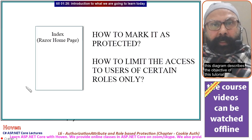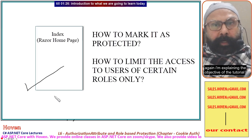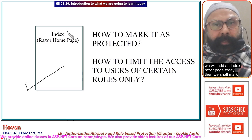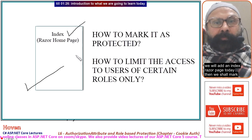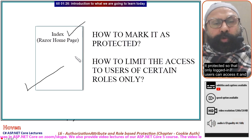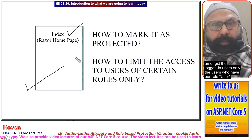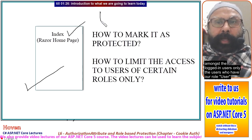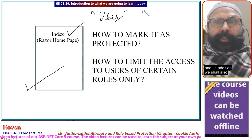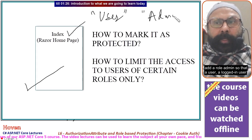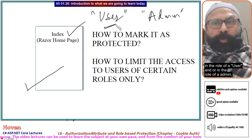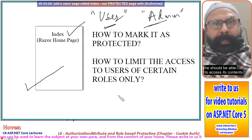This diagram describes the objective of this tutorial. We will add an Index Razor page today, then mark it protected so that only logged-in users can access it. Amongst the logged-in users, only those with the role 'user' can access it. In addition, we shall also add the role 'admin', so that a logged-in user in the role of 'user' or 'admin' should be able to access its contents.